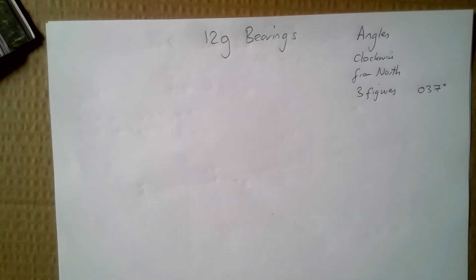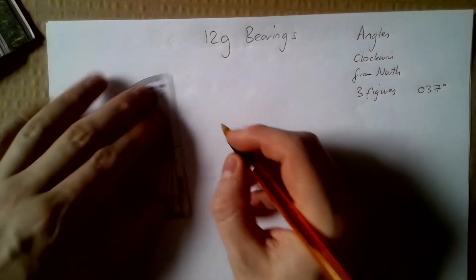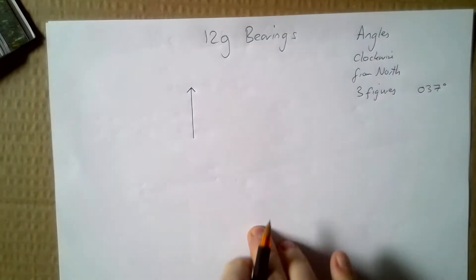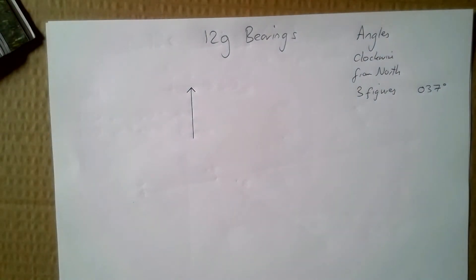Questions to do with bearings will always tell you where north is, and if it isn't, it's just up the page. It's the same with maps, always going up. There'll be an N next to it to show that it's north.